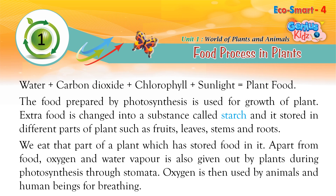The food prepared by photosynthesis is used for the growth of the plant. Extra food is changed into a substance called starch and stored in different parts of plants such as fruits, leaves, stems and roots. We eat that part of a plant which has stored food in it. Apart from food, oxygen and water vapor are also given out by plants during photosynthesis through stomata. Oxygen is then used by animals and human beings for breathing.